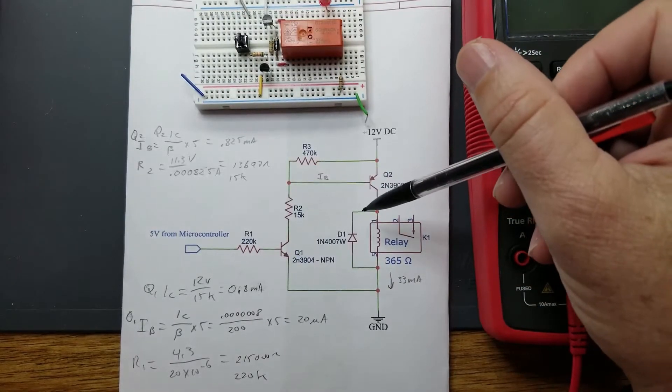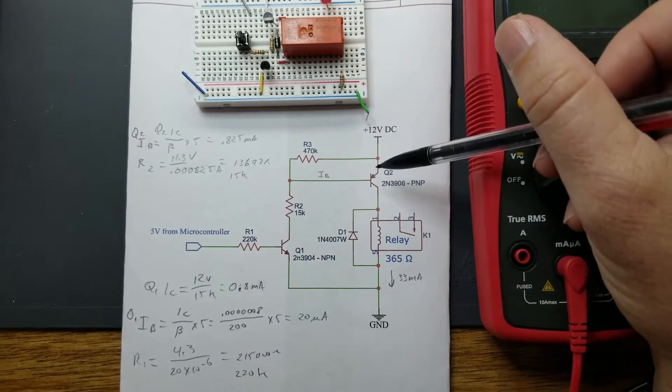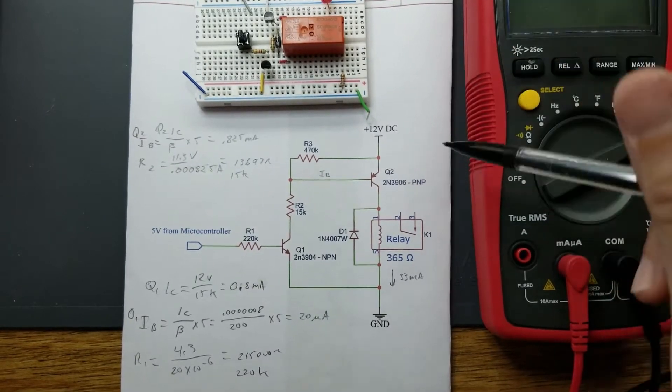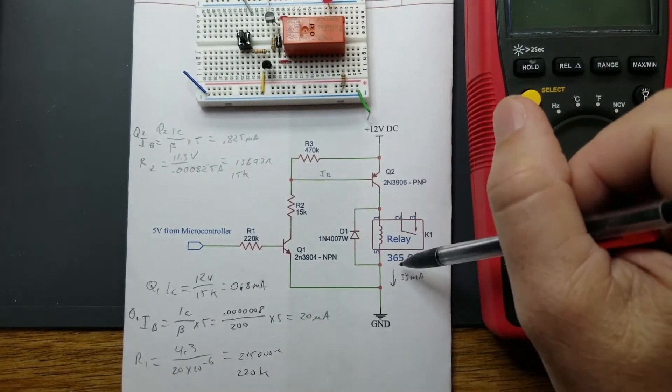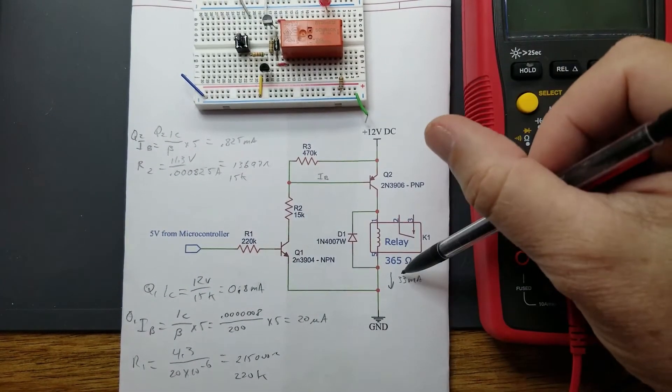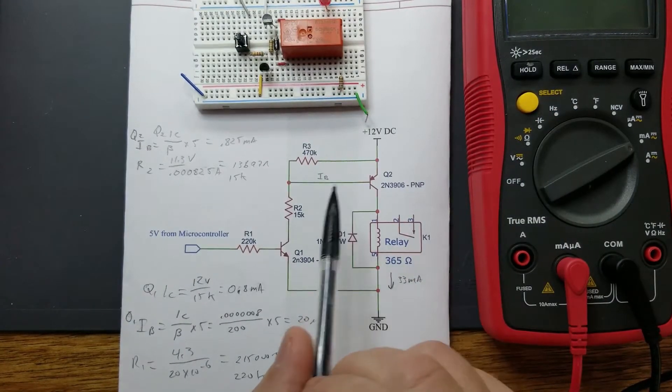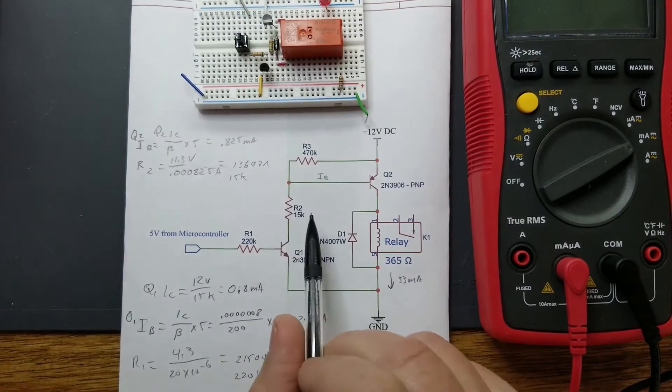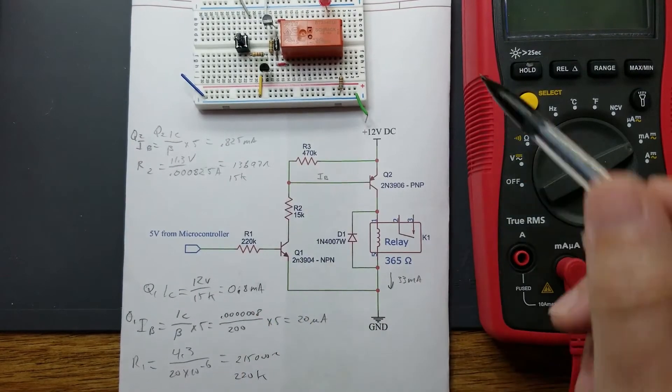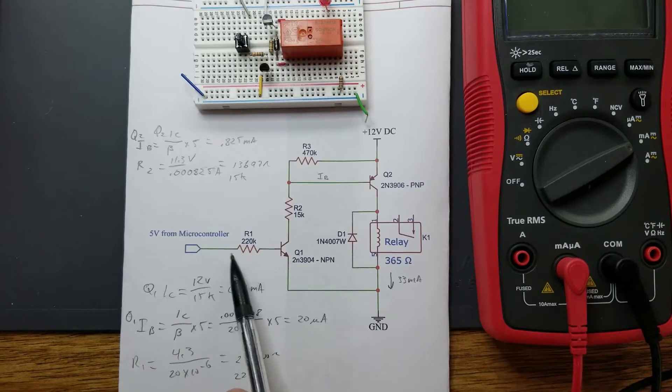The calculations for this final stage will be the same for the multiple-stage relay driver circuit. The current going through the relay is going to be the 12 volts divided by the 365 ohms, which gives you 33 milliamps. That's going to be used as a basis to calculate your base resistor, which is 15k.